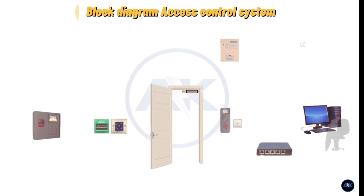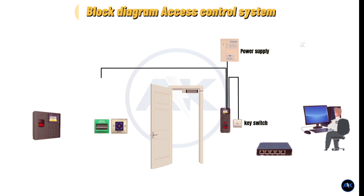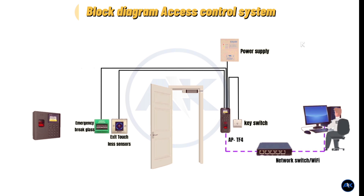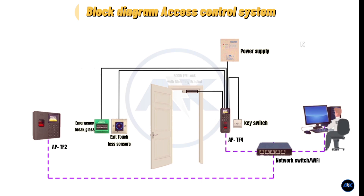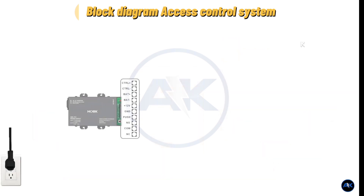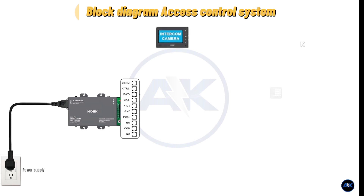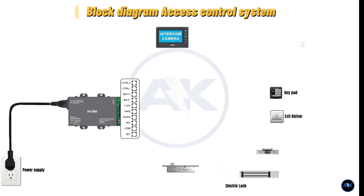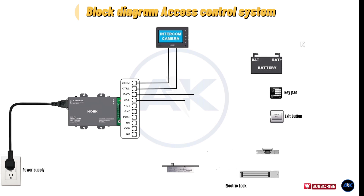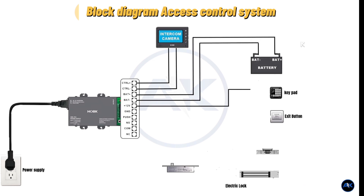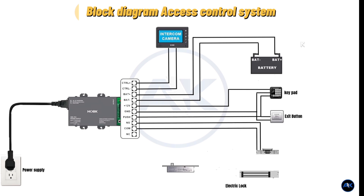In this video, I will guide you step by step how to wire an Access Control System. An Access Control System is an essential component of a modern security system, providing a convenient and effective way to regulate and monitor access to restricted areas. A wiring diagram is a visual representation of how the different components of an Access Control System are interconnected, helping security professionals understand and troubleshoot the system. The diagram typically includes the main control panel, card readers, electric locks, exit buttons, and other devices.